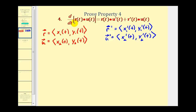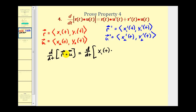We'll start with the left side and see if we can arrive at the right side of this property. This is going to be equal to the derivative with respect to t of the dot product of r and u. The dot product gives us x sub one of t times x sub two of t — note this is a dot product while this is multiplication — plus y sub one of t times y sub two of t.